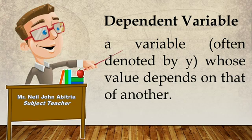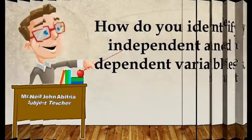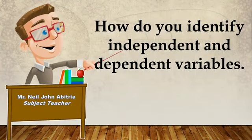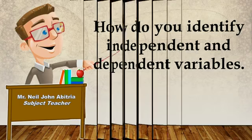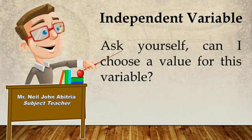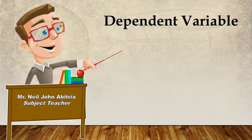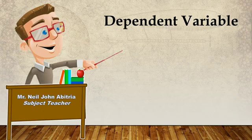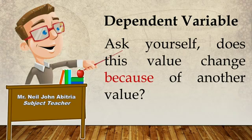Dependent variables are changed because of another variable. So, how do you identify independent and dependent variables? Here are some tips. For the independent variable, simply ask yourself: Can I choose a value for this variable? For the dependent variable, ask yourself: Does this value change because of another value?